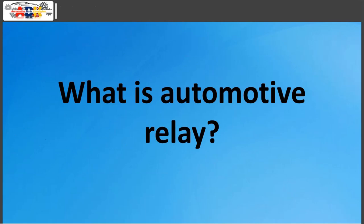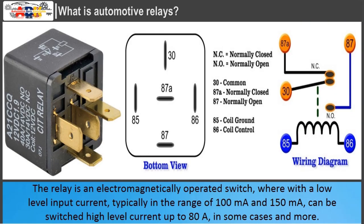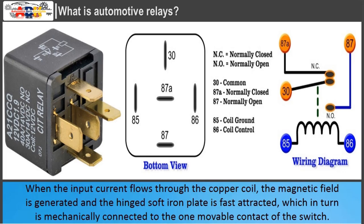What is Automotive Relay? The relay is an electromagnetically operated switch, where with a low-level input current, typically in the range of 100 mA and 150 mA, can be switched high-level current up to 80 A in some cases and more.